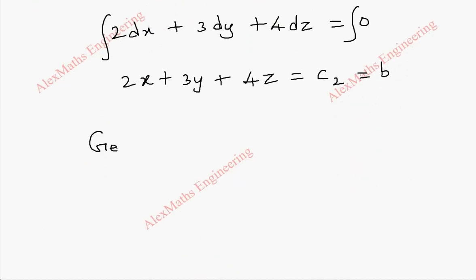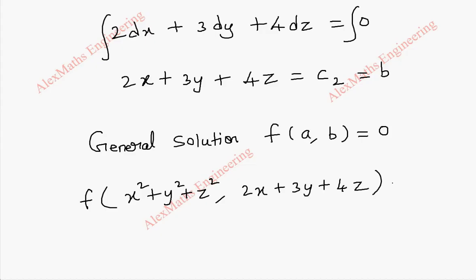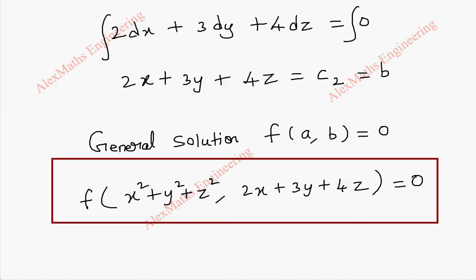Now using these two results, we can write the general solution. The general solution is of the form f(a, b) equal to 0. So it is f of (x squared plus y squared plus z squared, 2x plus 3y plus 4z) equal to 0. This is the required general solution for the given partial differential equation using Lagrange's multiplier method.